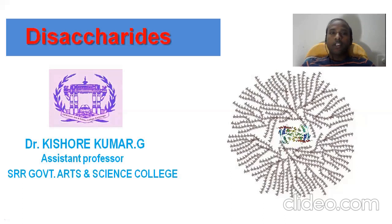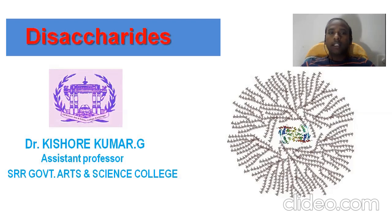Hello everyone. Today I am going to discuss about disaccharides. Disaccharides are carbohydrate biomolecules which are necessary for all living cells. In previous classes we discussed about monosaccharides, their functional advantages, stereoisomerism, and their projection formulas — that is Fischer and Haworth formulas. Today's class is exclusively for disaccharides because we need to learn many things in disaccharides.